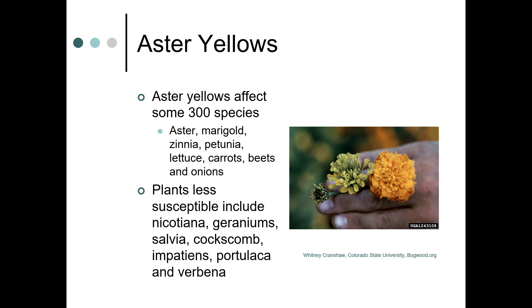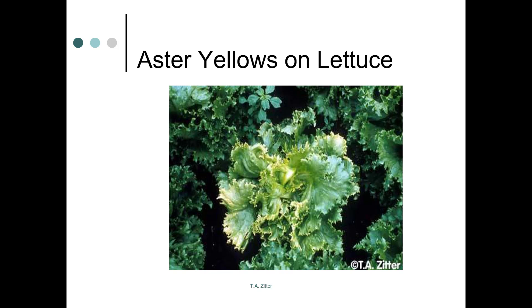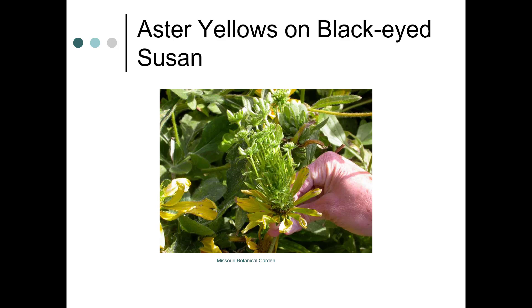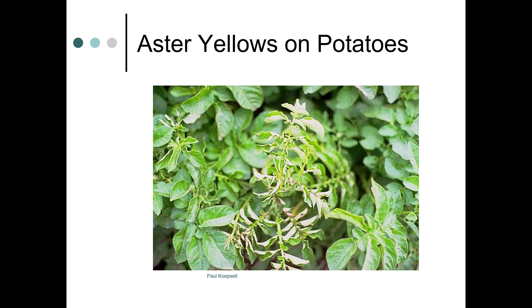If you do know you have aster yellows in the area, plants that may be less susceptible include nicotiana, geranium, salvia, impatiens, portulaca, and verbena. Here's what it looks like on lettuce — you may think it's a deficiency, but this is actually the disease damage. Here's what it looks like on black-eyed Susan, and here's what it looks like on potatoes. As mentioned, other families are affected by this.